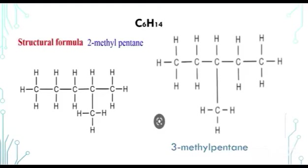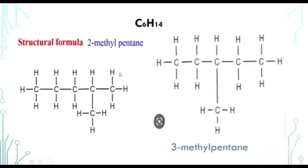Last example of positional isomers — we have 2-methylpentane and 3-methylpentane. What is different here is the position of the methyl group. Counting from one side, the methyl group is on the second carbon in 2-methylpentane. For 3-methylpentane, counting from either side, the methyl group is on the third carbon. Both have 6 carbon atoms and 14 hydrogen atoms — same molecular formula, but different positions of the substituent.